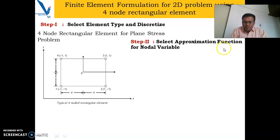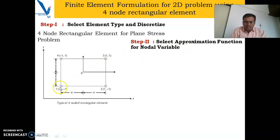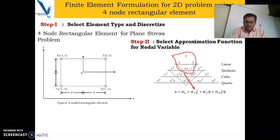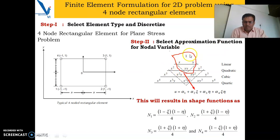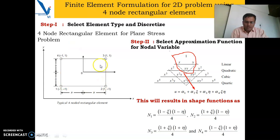The second step is to select an approximation function for the nodal variable. The nodal variable here is displacement — for structural problems, the nodal variable is always displacement. We approximate the displacement within the element using a polynomial function. We select a linear polynomial, so displacement U is approximated using this linear polynomial. By applying conditions at nodes 1, 2, 3, and 4, we obtain the shape functions, and we can write U and V displacements in the x and y directions respectively.